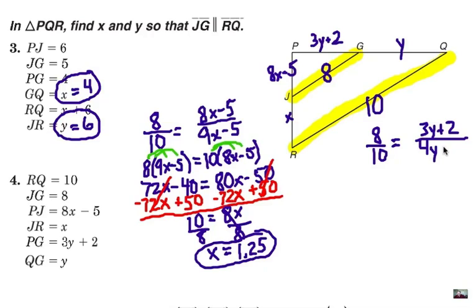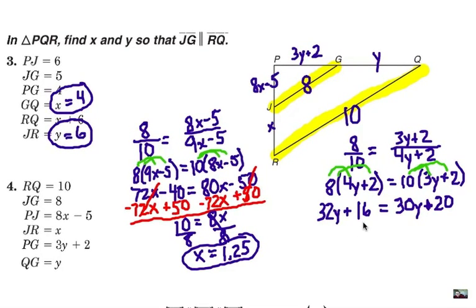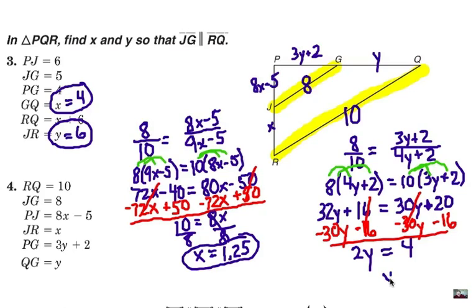Similar to the X problem here, let's cross-multiply and use distributive property. 32Y plus 16 equals 30Y plus 20. Now, we're going to isolate the Y on one side and the constant on the other by subtracting Y on each side and subtracting 16 from each side. 2Y equals 4 and then Y must be 2. Alright, X is 1.25 and Y is 2.